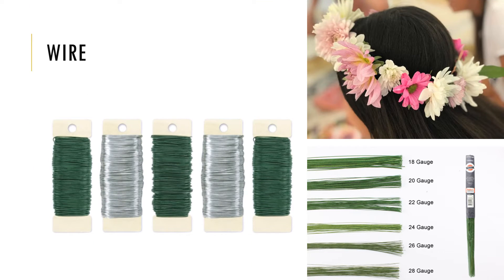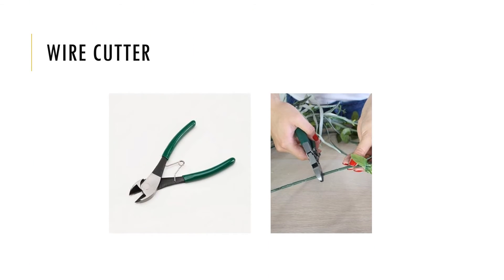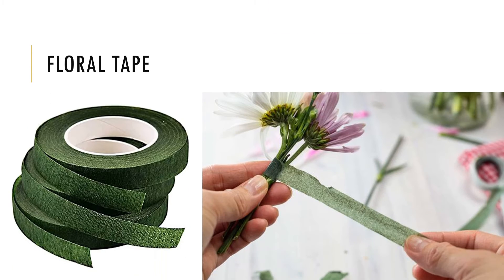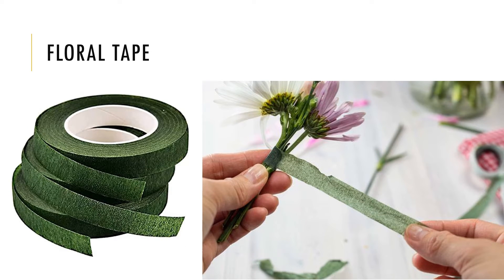Wire is specially used in garlands and wreaths to hold flowers together. Like wires used in construction, it has gauges to represent thickness — the higher the number, the thinner the wire; the lower the number, the thicker the wire. The wire cutter is used to cut the wire. Floral tape is used to stick flowers together or to secure the prong onto the surface of the container before placing the floral foam.